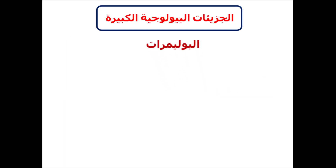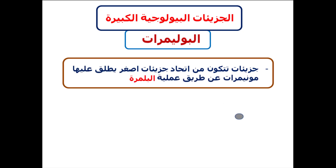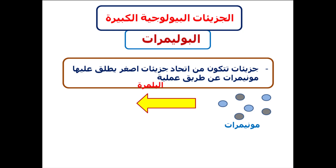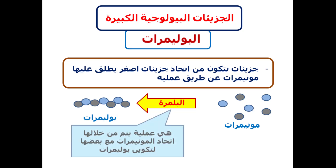البوليمرات هي جزيئات بتتكون من اتحاد جزيئات أصغر يطلق عليها مونومرات عن طريق عملية تسمى البلمرة. البلمرة هي عملية بيتم من خلالها اتحاد المونومرات الصغيرة مع بعضها لتكوين بوليمر كبير.